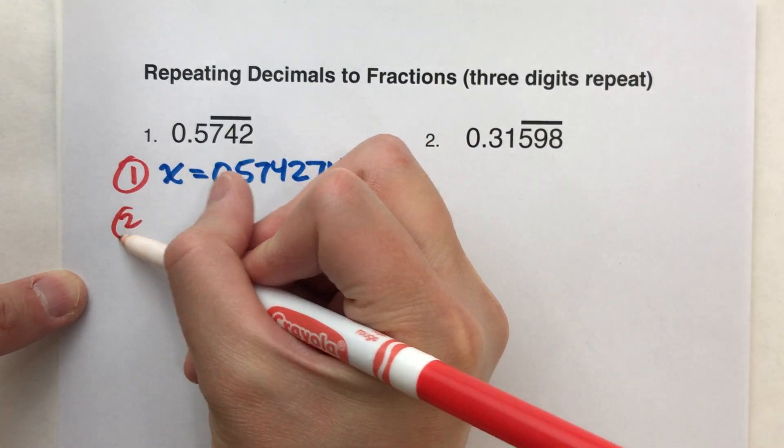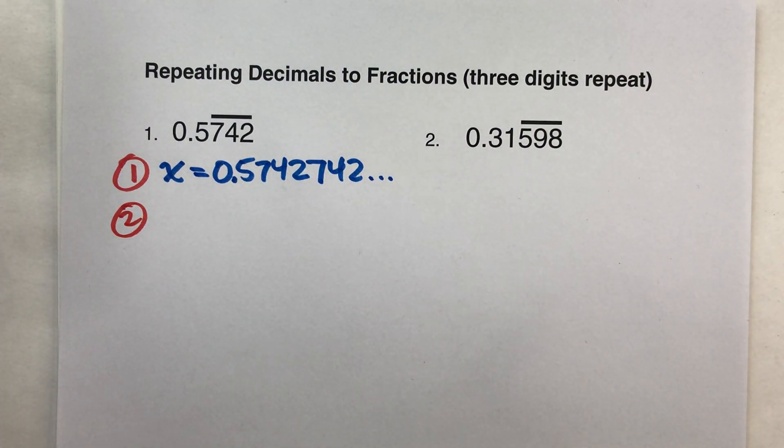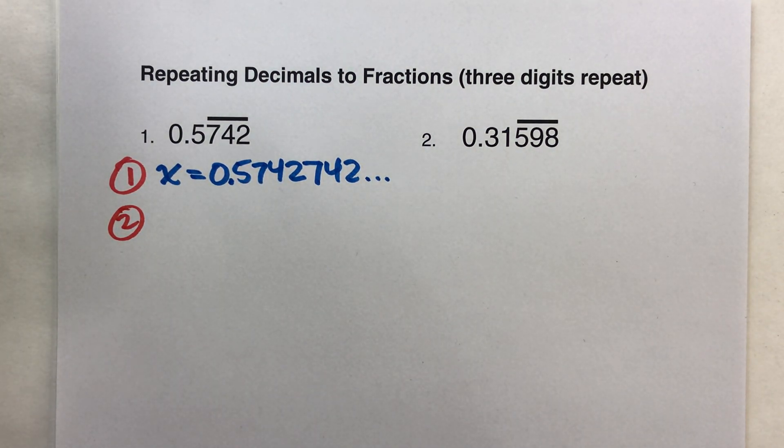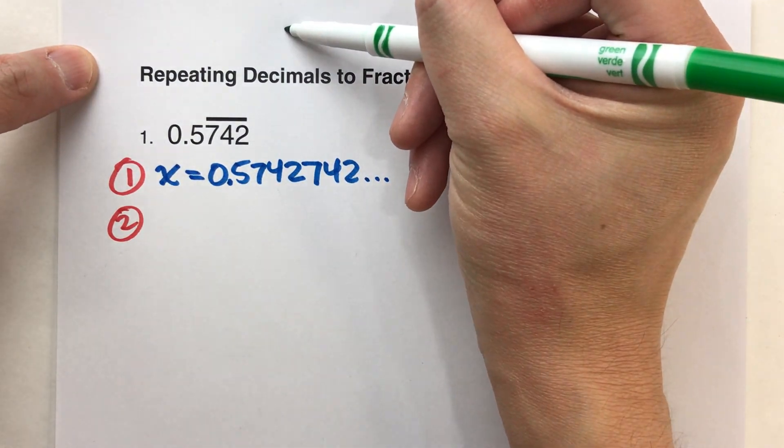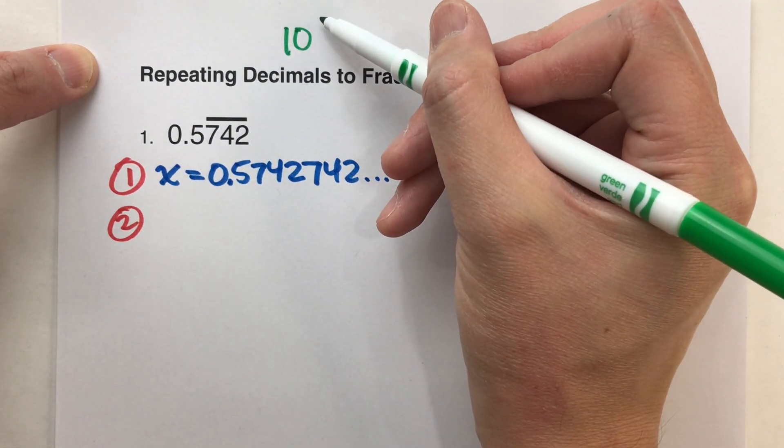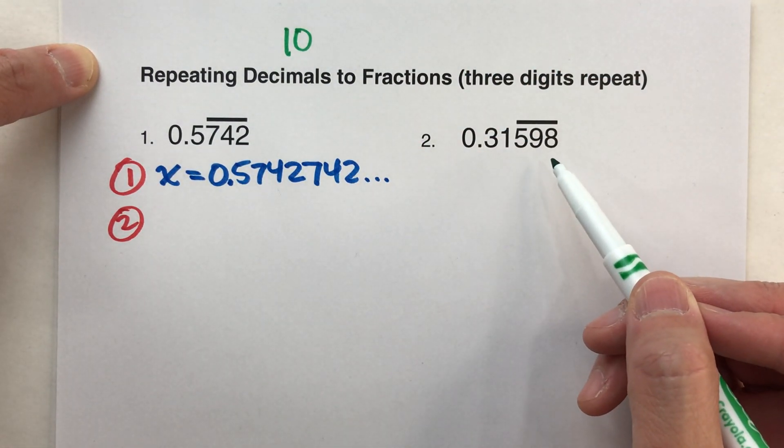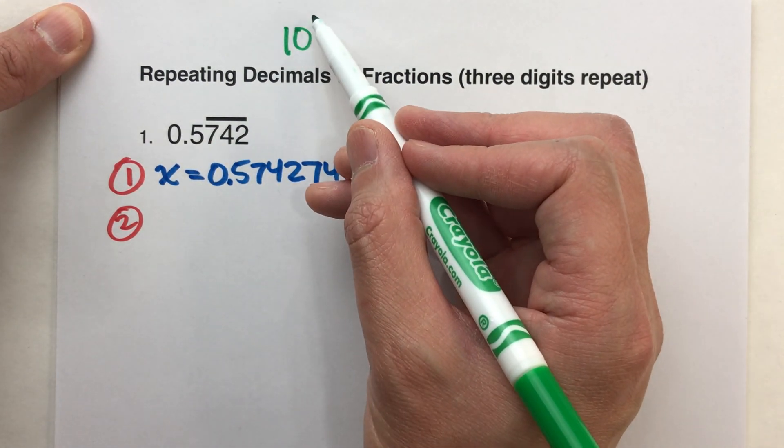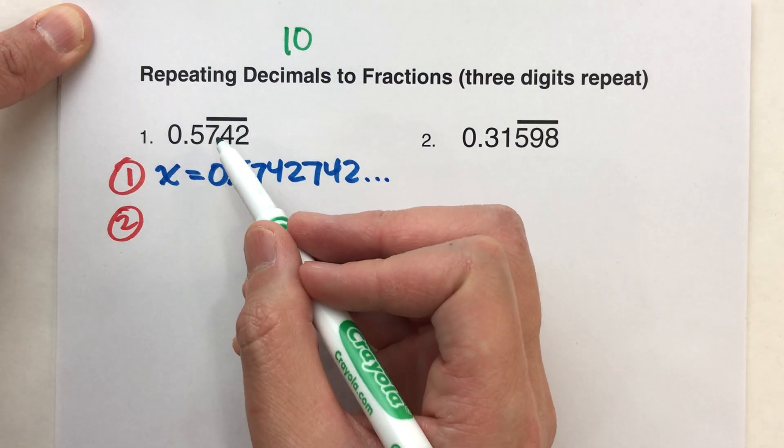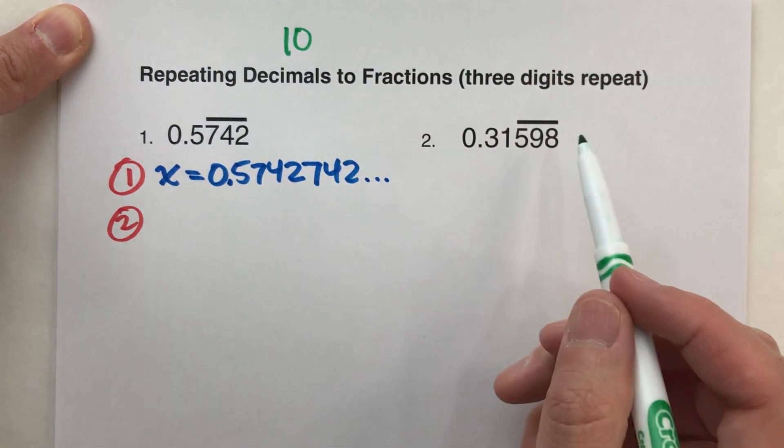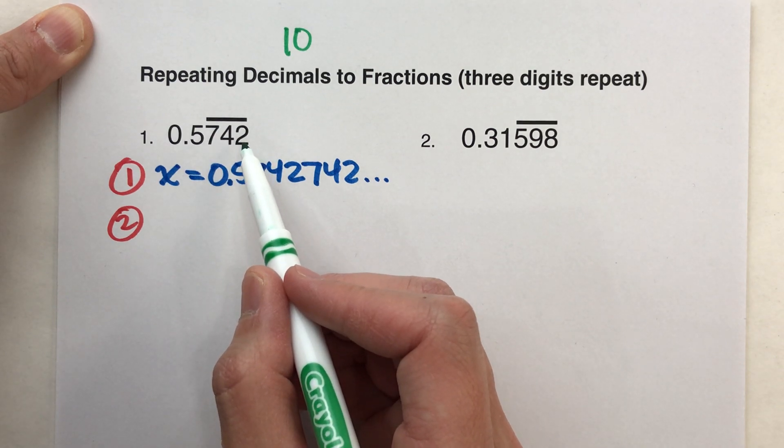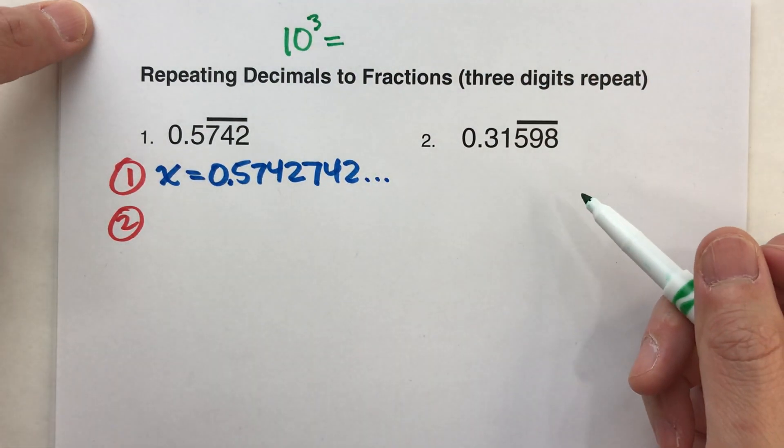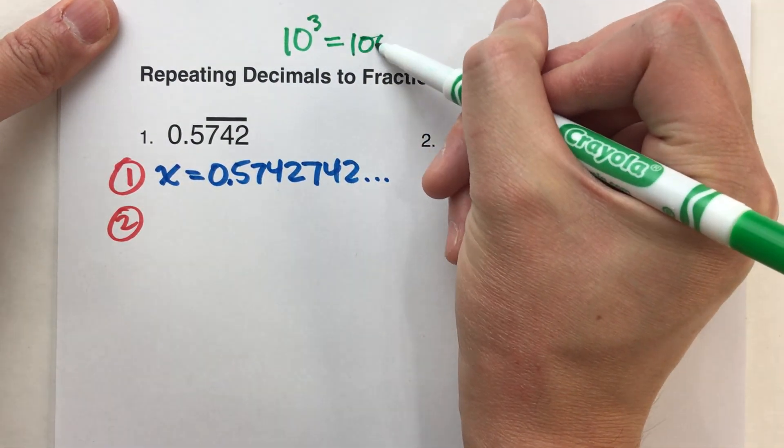Step two. We are going to take that equation and make a second equation by multiplying both sides by a number. Now what number? Well, there's a trick to know what number to multiply by, 10 to the power of however many digits are repeating. Now in previous videos, when we had one digit repeating, we do 10 to the first power. In another video, we had two digits repeating, so we do 10 to the second power. This example has three digits repeating, so we're going to do 10 to the third power. And 10 to the third power means 10 times 10 times 10, which is a thousand.